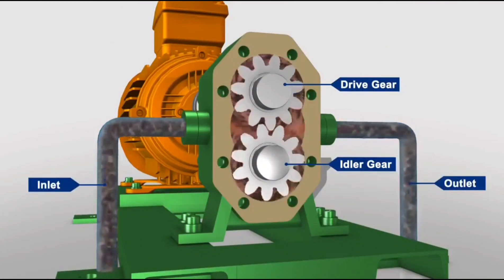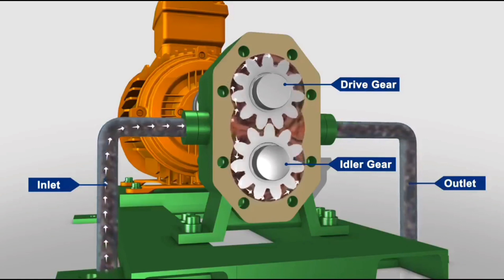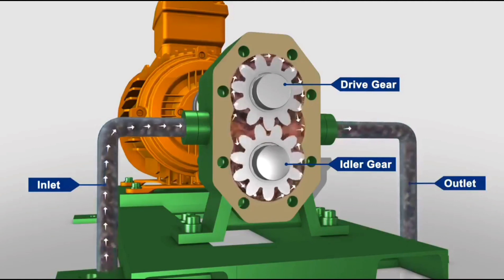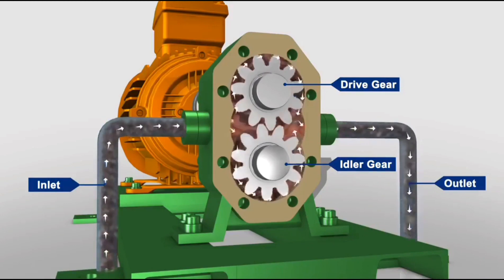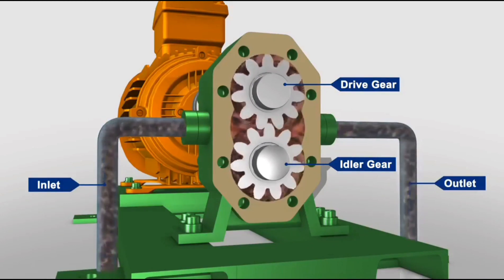When the gears rotate, the liquid which is trapped in the gear teeth spaces between the housing bow and the outside of the gears is transferred from the inlet side of the pump to the outlet side of the pump.